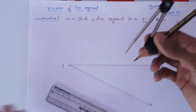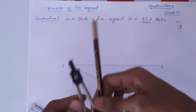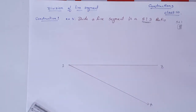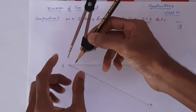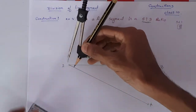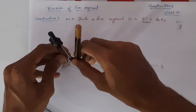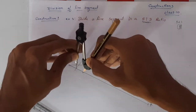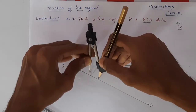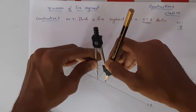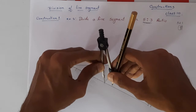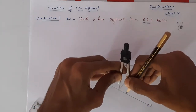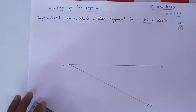Take a compass — you can use any measurement you like, I am not saying you must use one centimeter. But you must use the compass only, not your scale to measure, because in the exam they will check whether you are using a scale or a compass. Keep the compass at point A and draw eight equal arcs along AX — one, two, three, four, five, six, seven, eight.